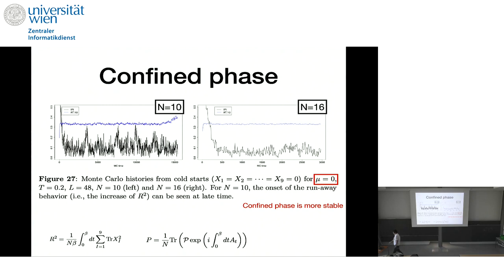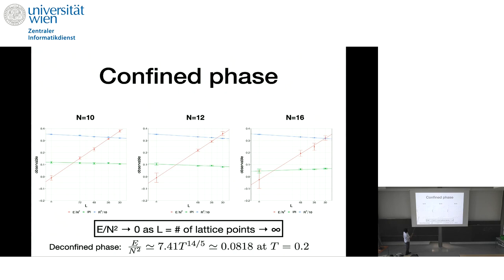And if we look at the energy, and see, at each fixed value of N, if we take continuum limit, so L is lattice size, and L equals to infinity is continuum limit. Then, if we extrapolate E over N squared, to continuum limit, this is consistent with zero.